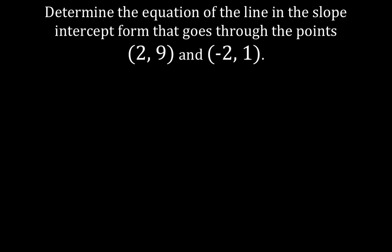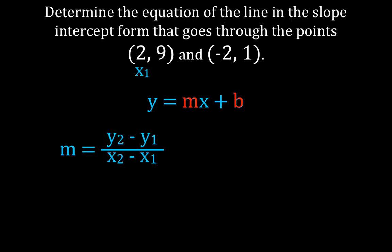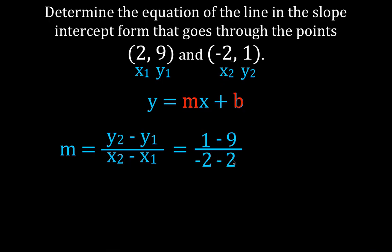One more — you can pause here and try it first if you want. We have our slope formula; we need m and b. Plugging values in: y2 is 1, y1 is 9, x2 is minus 2, x1 is 2. Please be careful with the minus signs. So 1 minus 9 is minus 8, and minus 2 minus 2 is minus 4. That's minus 8 divided by minus 4 — a negative divided by a negative is positive — and 8 divided by 4 is 2. Therefore the slope is 2.